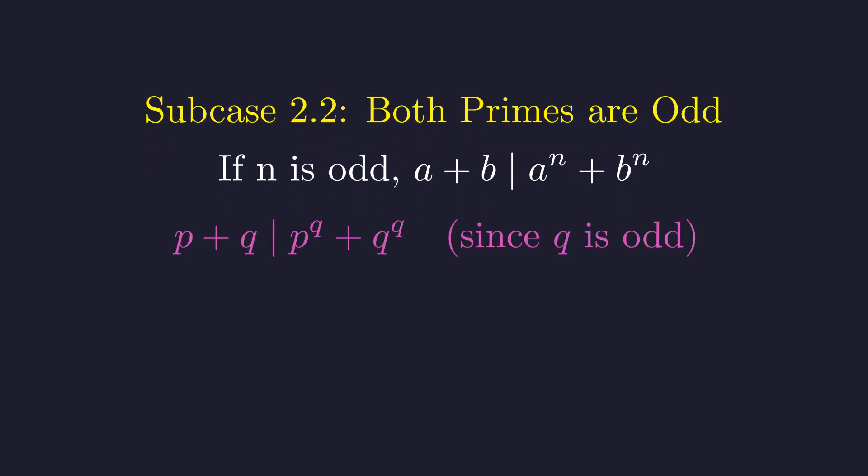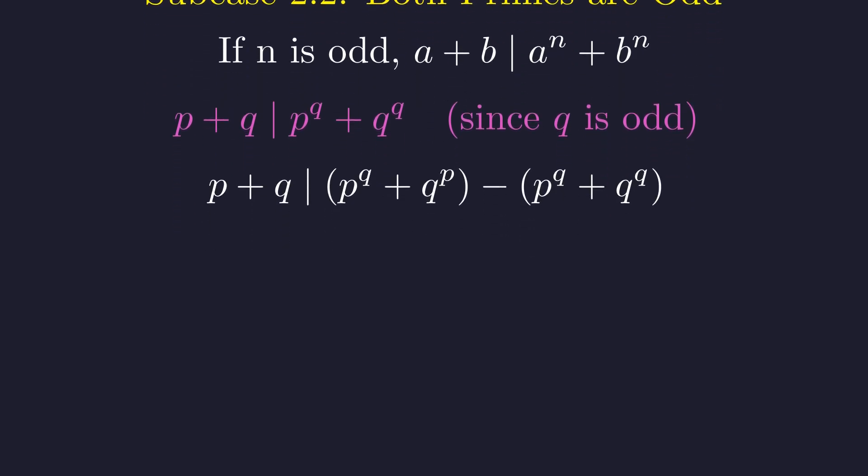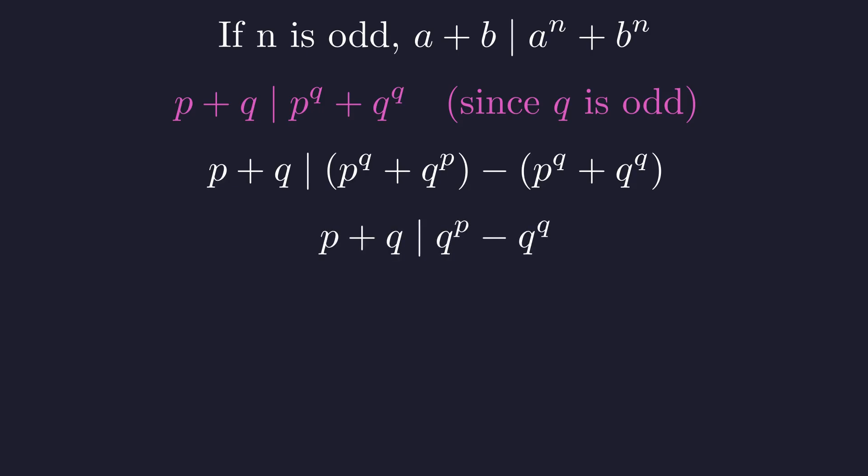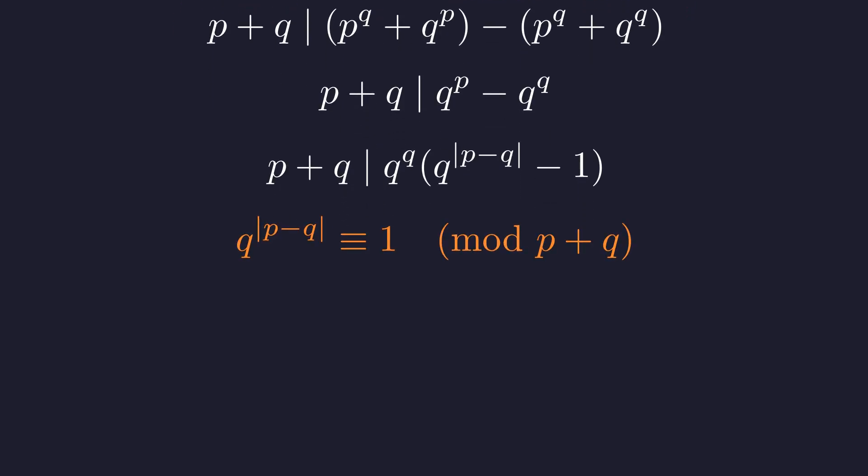First, since q is odd, we know for a fact that p plus q must divide p to the q plus q to the q. Let's compute that difference. The p to the q terms cancel, leaving a much simpler condition. p plus q must divide q to the p minus q to the q. Factoring this expression and using an absolute value to handle both p greater than q and q greater than p, we get this. Since p and q are distinct primes, p plus q is co-prime to q, which means we can ignore the q to the q factor. This gives us our first condition for any solution.